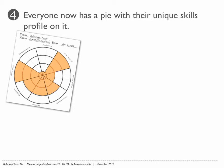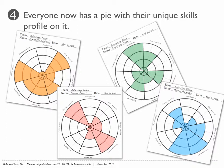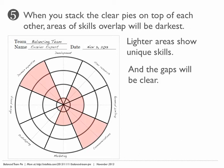Now everyone has a pie with their unique skills profile on it. They'll all be different, and they'll all be in a different color. When you stack the clear pies on top of each other, areas of skills overlap will be darkest. Lighter areas show unique skills, and the gaps will remain clear.